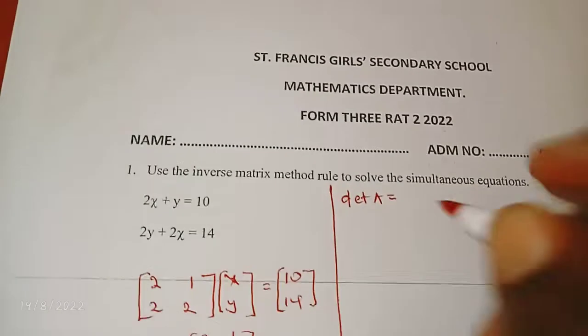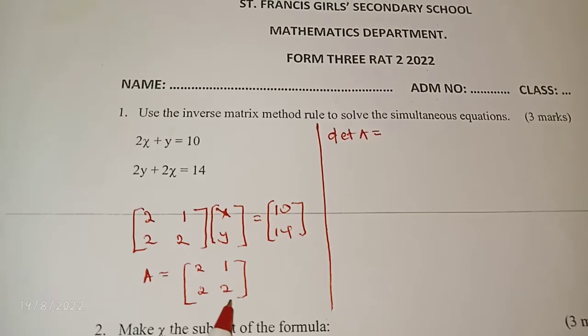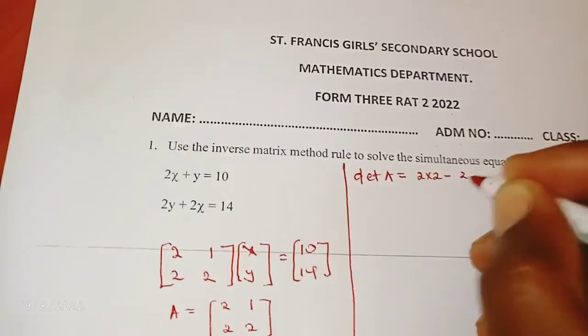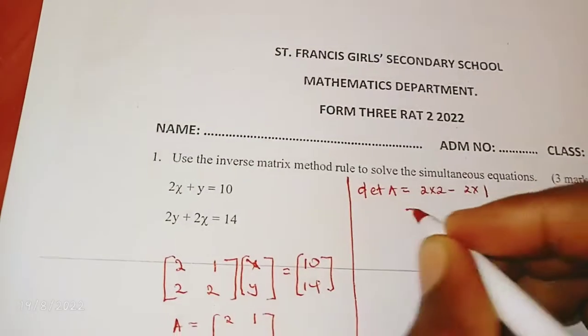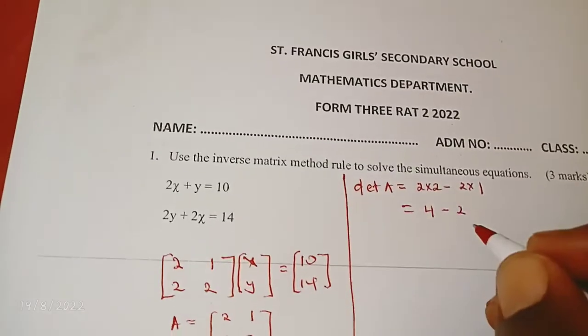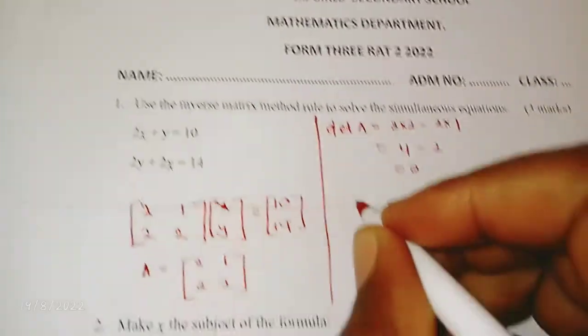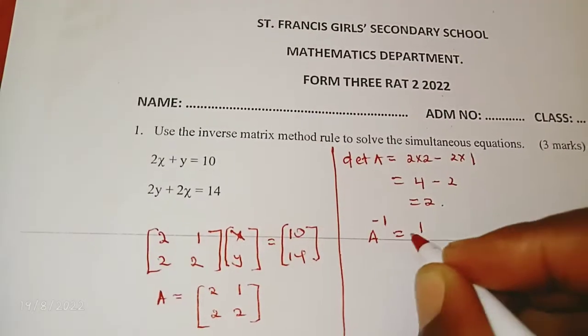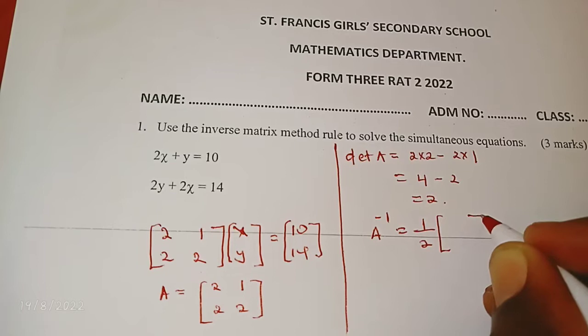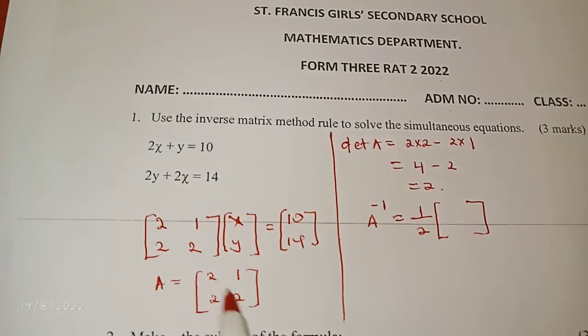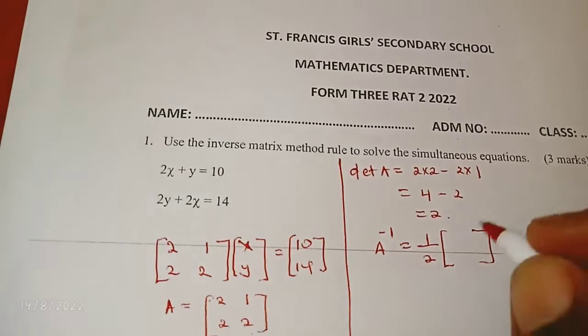So the determinant is going to be this times that minus this times that, which is 2 times 2 minus 2 times 1, and this will give me 4 minus 2, which is nothing but a 2. Then I want to get inverse of A, which is 1 over determinant times the matrix here when it has been transposed. I take this one here, this one here, then the rest acquire negative sign. So we have 2, 2, negative 1, negative 2.